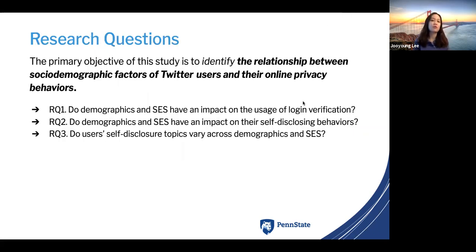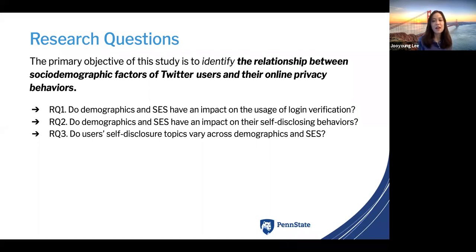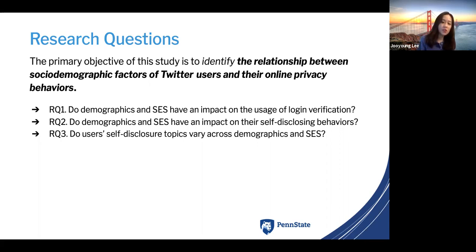We propose three different research questions to identify the relationship between social demographic factors of Twitter users and their online privacy behaviors. The first research question is: do demographics and SES have an impact on the usage of login verification? The second is whether demographics and SES have an impact on users' self-disclosing behaviors. And third, do users' self-disclosure topics vary across demographics and SES?